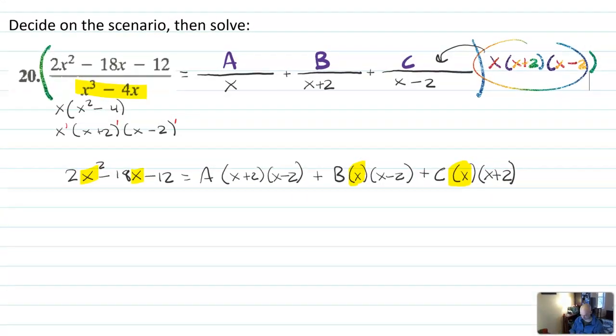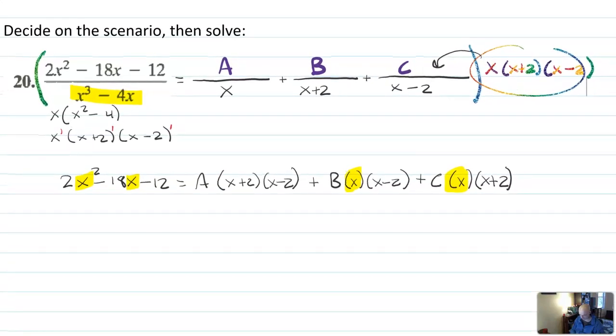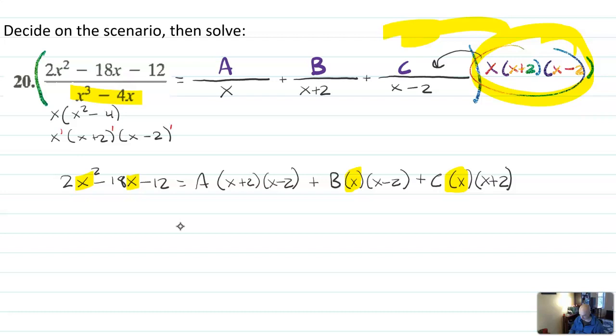So this is the problem we were looking at before. We factored the bottom, set up the repeated factors. We cleared out all the fractions by multiplying by the total denominator on the other side, canceled everything out, and we'd arrived at this type of expression here.